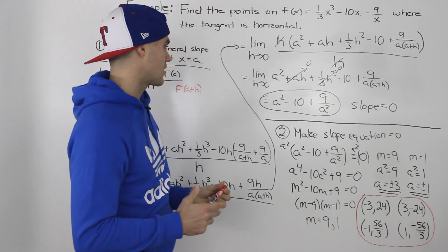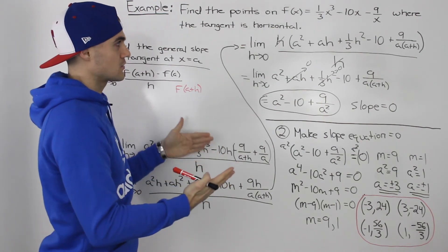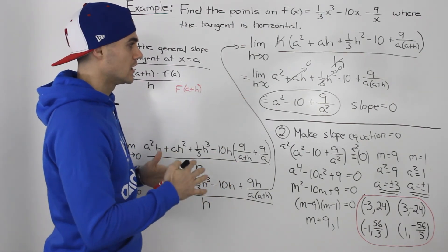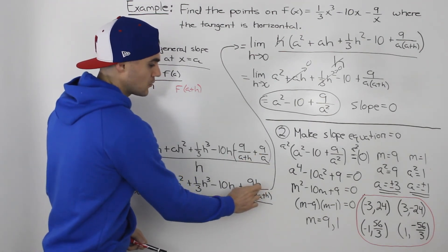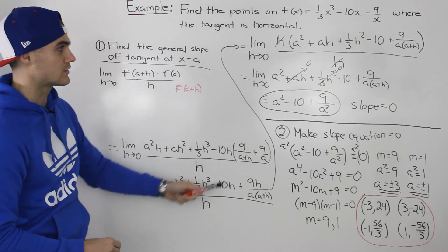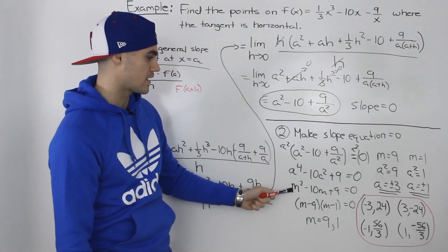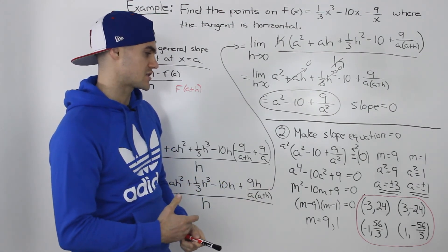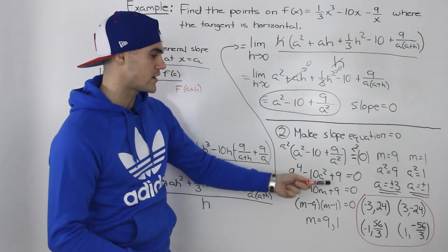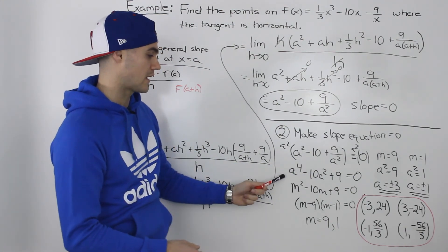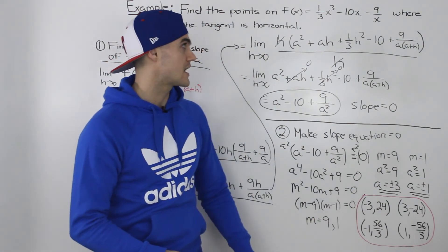Overall, the concepts aren't too bad — there are just two steps: find the general slope formula, then set it equal to 0 because a horizontal tangent has slope 0. The trickiest part is the algebra, especially combining those two fractions to factor out h, and recognizing that the quartic can be solved as a quadratic with a substitution. If that substitution doesn't work, review the factor theorem from advanced functions.